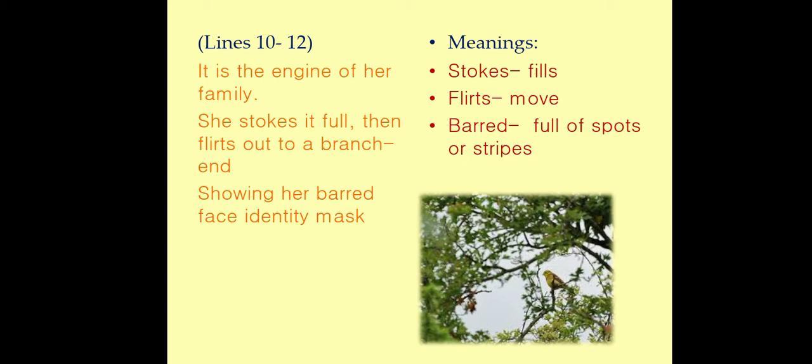It is the engine of her family. She stalks it full, then flirts out to a branch end, showing her bared face — her identity mask. The baby birds and the tree are the cause of motivation for the bird, and hence these are termed as engines for the goldfinch. Then she starts moving out towards the end of the branch again. There are black stripes on her face looking like a mask — her yellow body and black face is her identity.